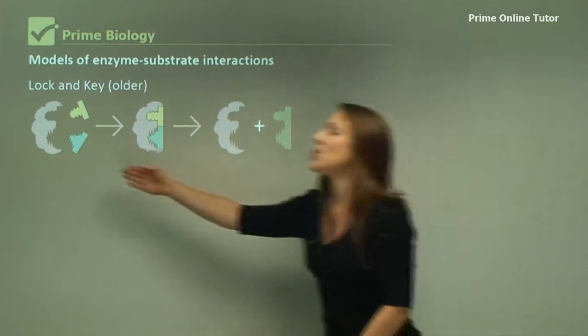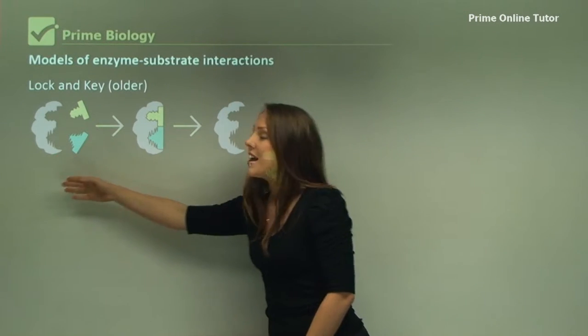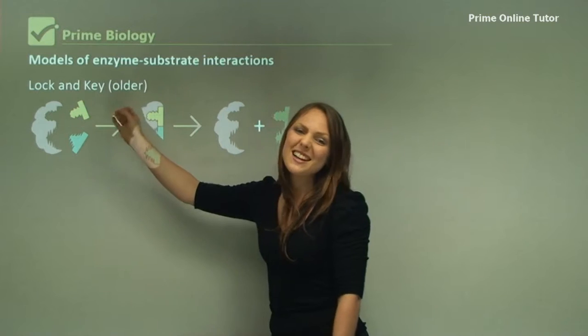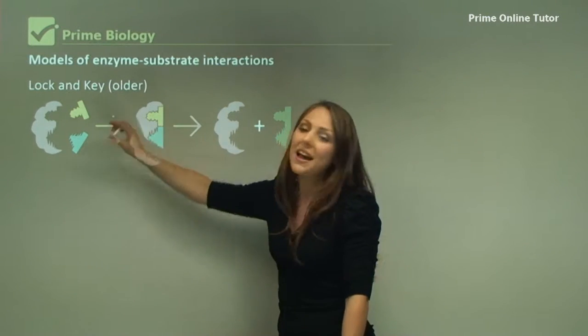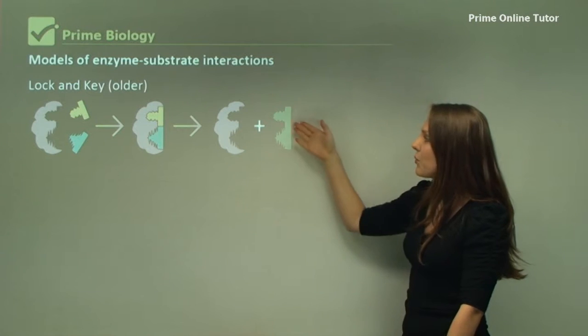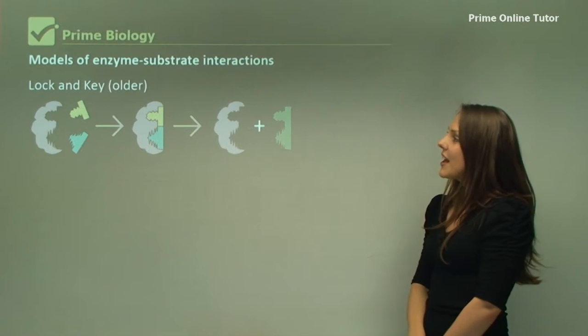And as you can see here, the enzyme shown in pinky purple and there's a substrate with yellow and blue, and they are exactly the same shape as the enzyme's active site. As you can see here, we've got a product at the end.